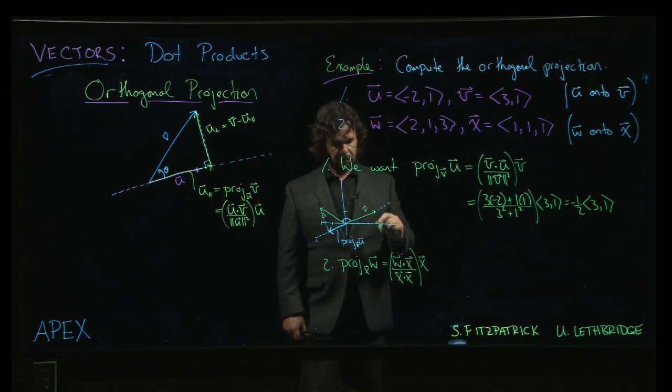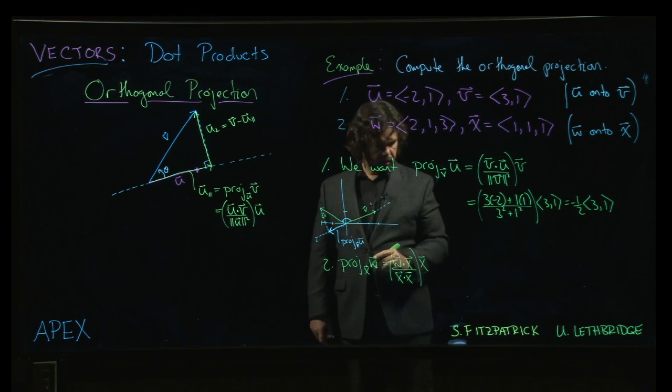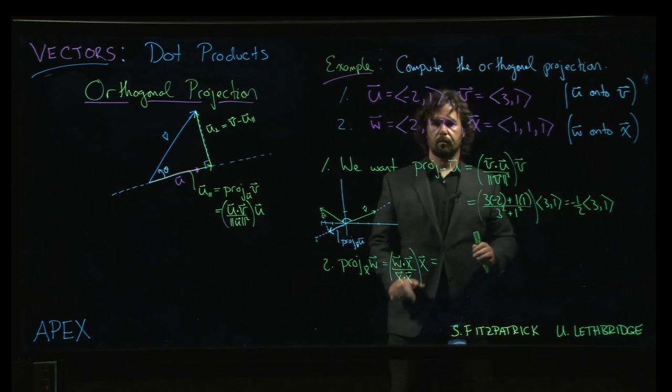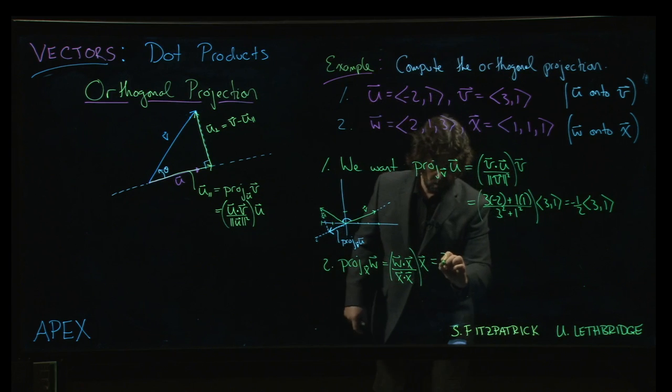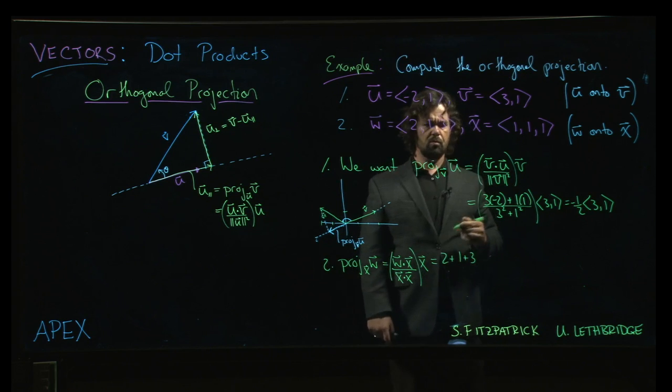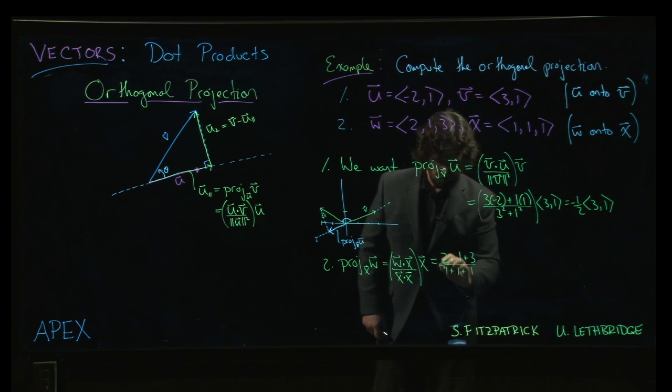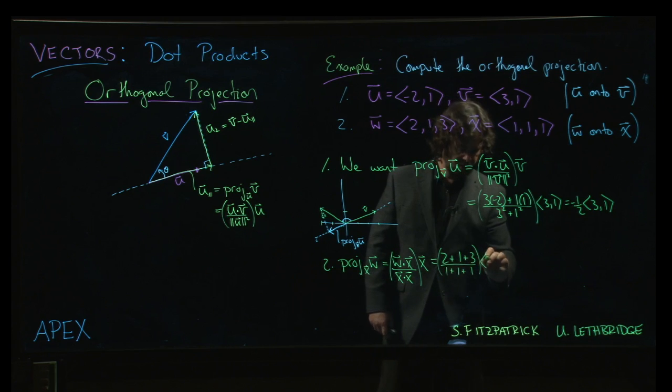We're projecting onto x, so we should get something parallel to x. So w dotted with x, we're going to get 2 times 1, 1 times 1, 3 times 1, that's 2 plus 1 plus 3. x dot x is going to be 1 plus 1 plus 1, that's 3.